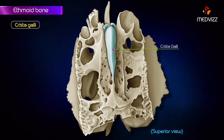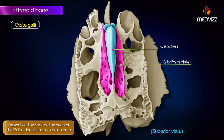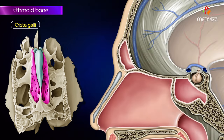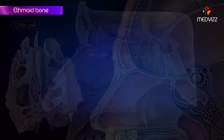The crista galli is a triangular median crest on the upper surface of the cribriform plate. It resembles the crest on the head of the Gallus domesticus, or cock's comb, and gives attachment to the anterior end of the falx cerebri.